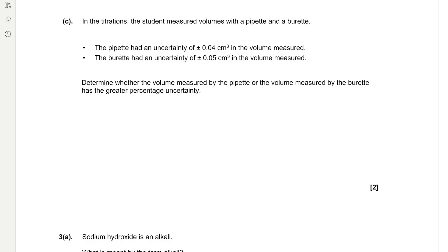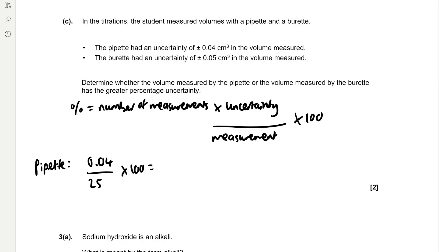In the titrations the student measured volumes with a pipette and a burette. The pipette had an uncertainty of ±0.04 cm³ and the burette had an uncertainty of ±0.05 cm³. Determine whether the volume measured by the pipette or burette has the greater percentage uncertainty. The formula for percentage uncertainty is number of measurements times uncertainty divided by measurement times 100. For the pipette we take one reading, so it's 0.04 divided by 25 cm³ times 100, which is 0.16%. For the burette we multiply by 2 because we take two readings and the smallest measurement is 24.2, so that's 2 × 0.05 / 24.2 × 100, which gives 0.41%. Clearly the burette has a larger percentage uncertainty.